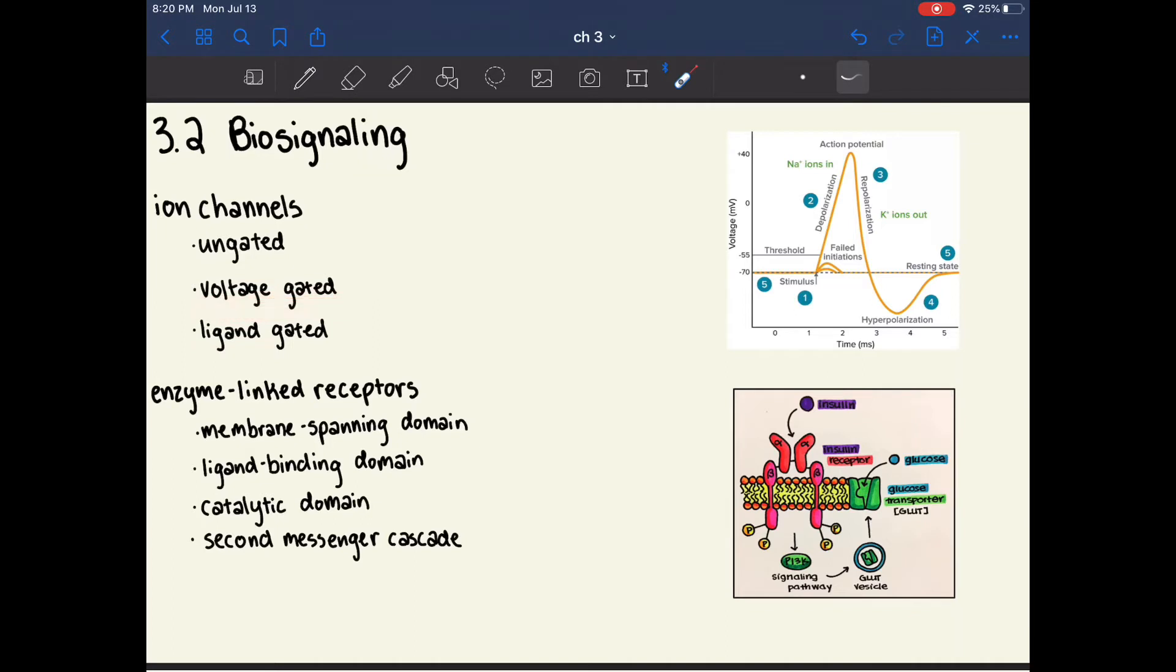Voltage-gated ion channels are ion channels that only open when a certain voltage is reached. For example, voltage-gated ion channels are very common in neurons. And here you can see a diagram of an action potential. So when a certain threshold voltage is reached, in this case, negative 55 milliamps, sodium ions are allowed into the cell because the voltage-gated sodium channels open up. Then when a certain voltage is reached, the potassium voltage-gated ion channels open and potassium ions are allowed out of the cell, which allows the neuron to reach its resting potential once again.